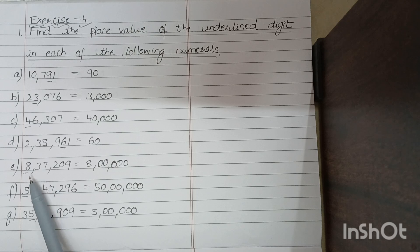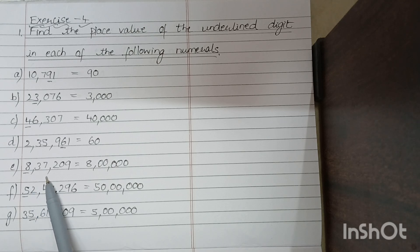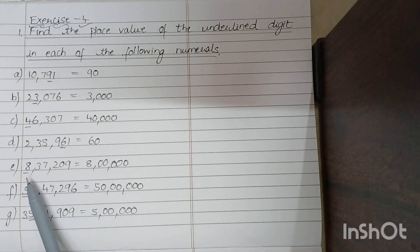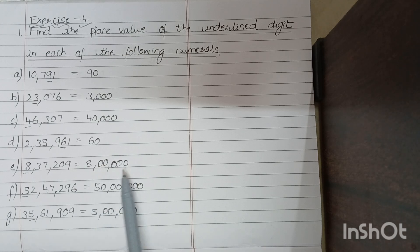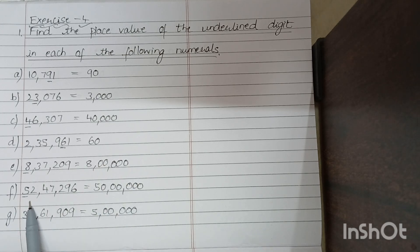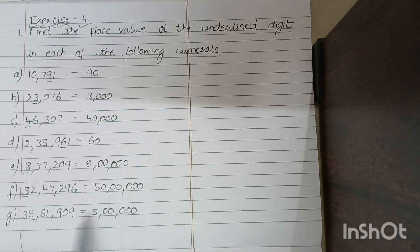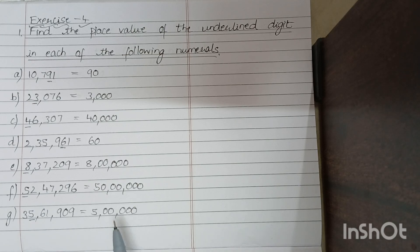E. 8,37,209. So 8 is in 8,00,000. Next, with 5 underlined, so it is 50,00,000 — the underlined digit is 5, so it is 5,00,000.